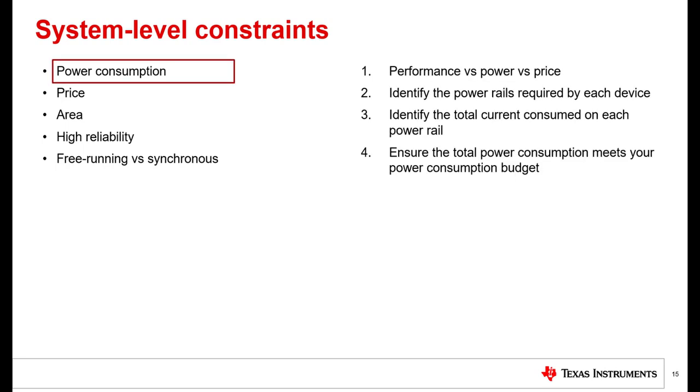Power consumption is one key aspect of system design. The first step in considering power consumption is the understanding that performance often comes at the expense of higher power or higher price. Sometimes semiconductor suppliers have different product families that can be optimized for performance or power. For example, the Texas Instruments LMK family of devices is more optimized for performance, whereas the CDC family of devices is more optimized for lower power.